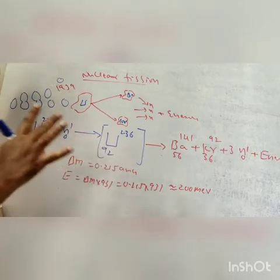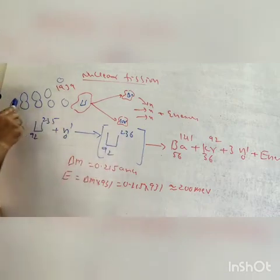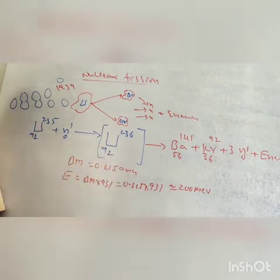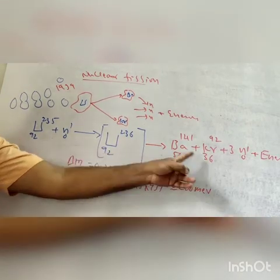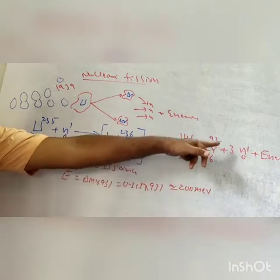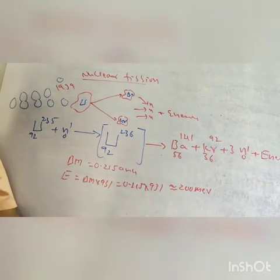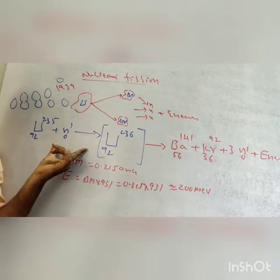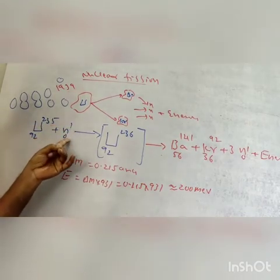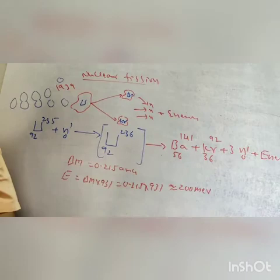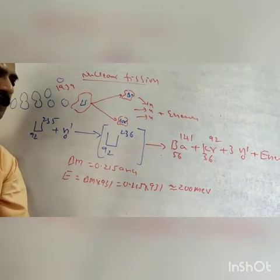The nucleus is split up and there are two elements: barium-56-141 and krypton-36-92. Uranium-92-235 plus slow neutron absorbs the slow neutron, then we get uranium-92-236, we get barium-56-141 plus krypton-36-92 plus 3 fast neutrons plus energy.